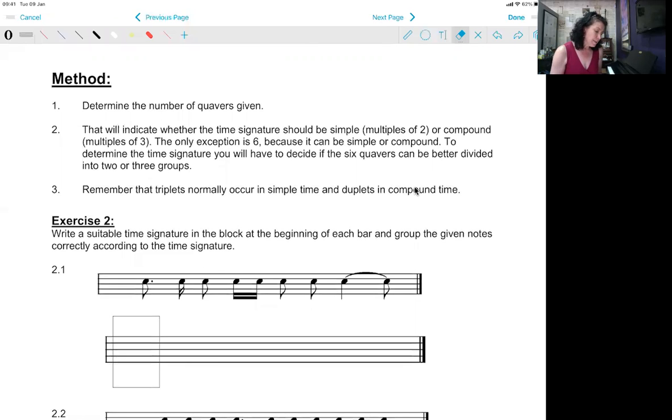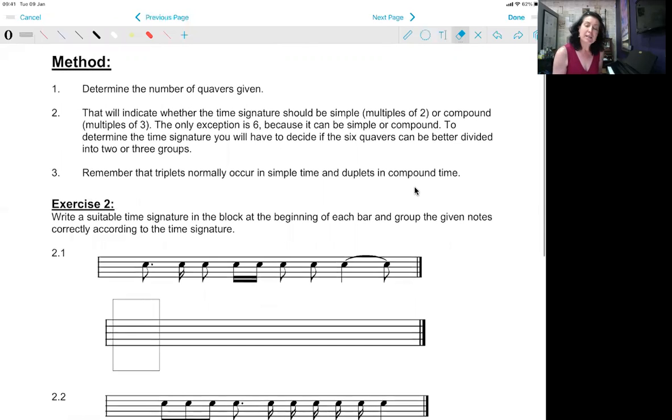The first step of the method is to determine the number of quavers given. So if you go to this exercise here and start counting the quavers, this will be one. The dot is equal to half the value of the note. So the value of the dot in this example will be a 16th, 16th plus 16th is a quaver.